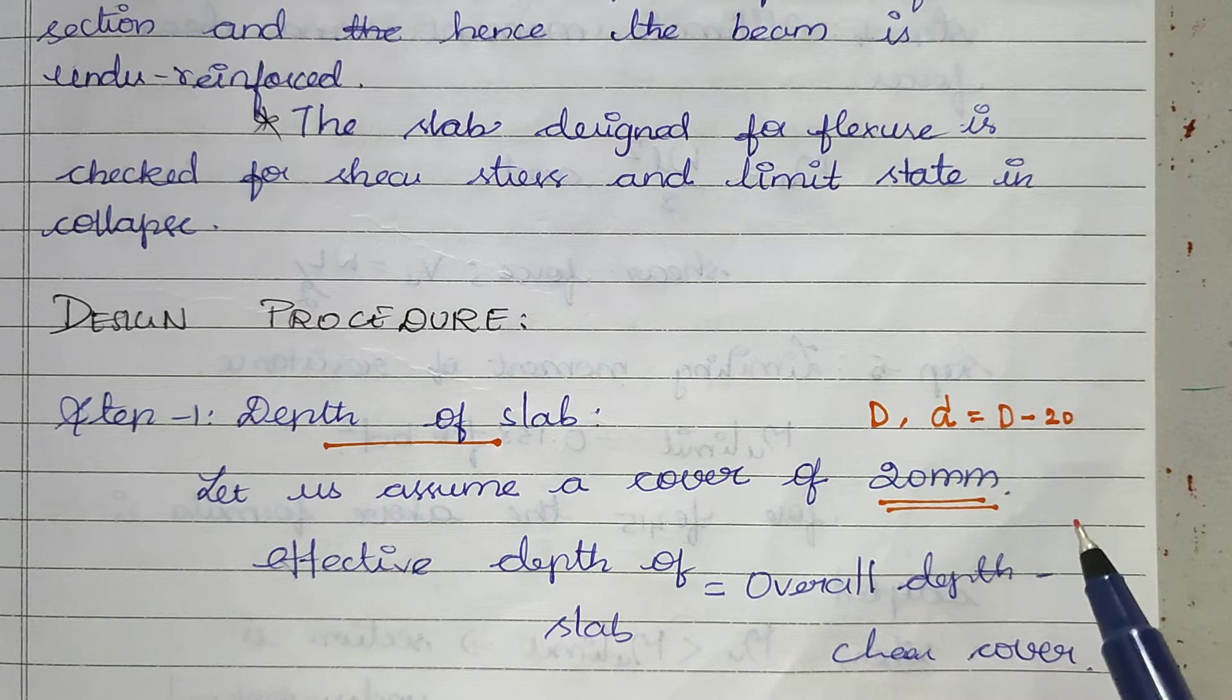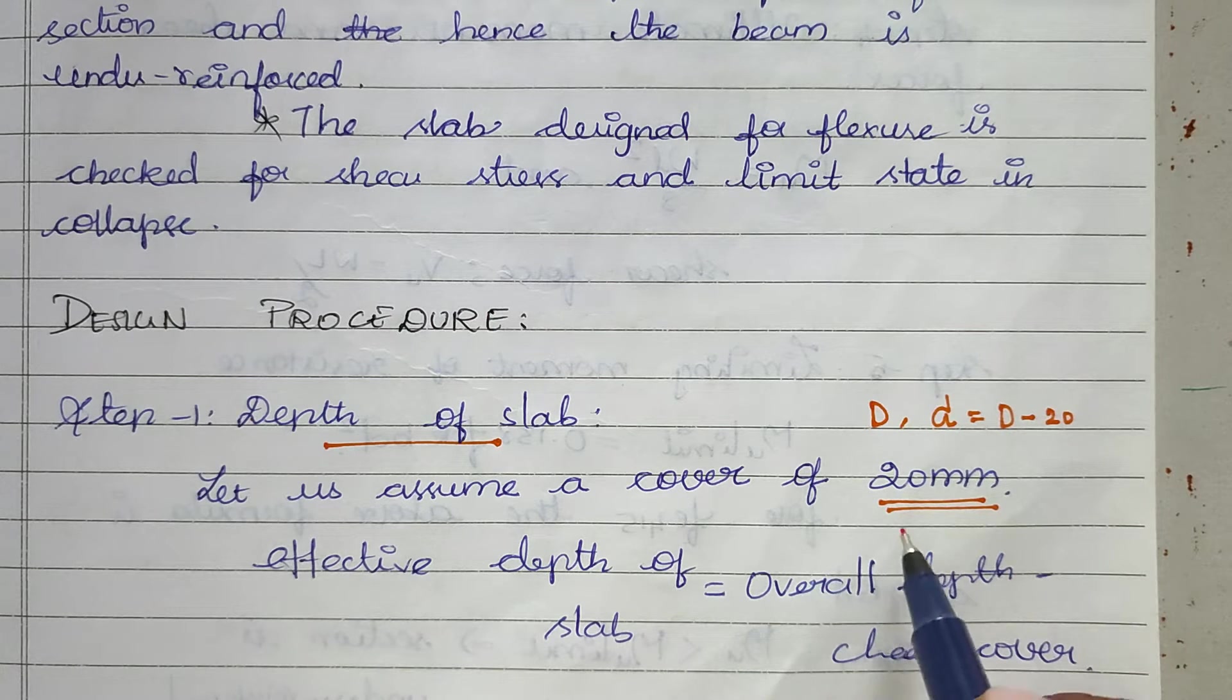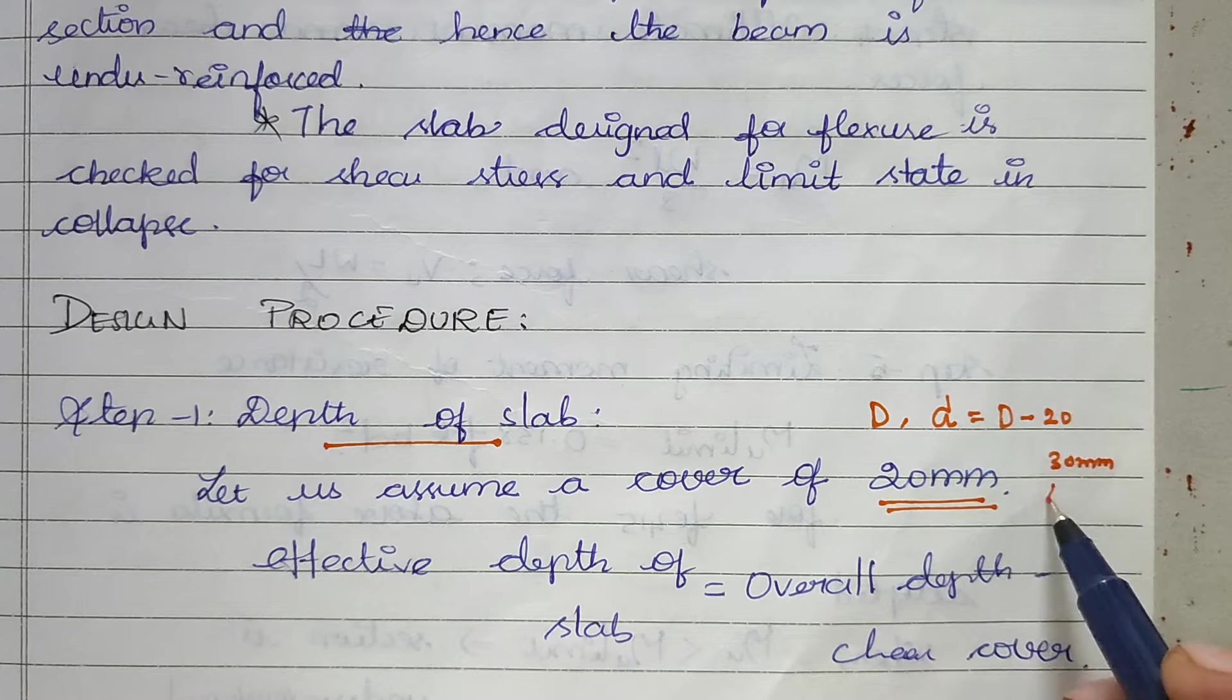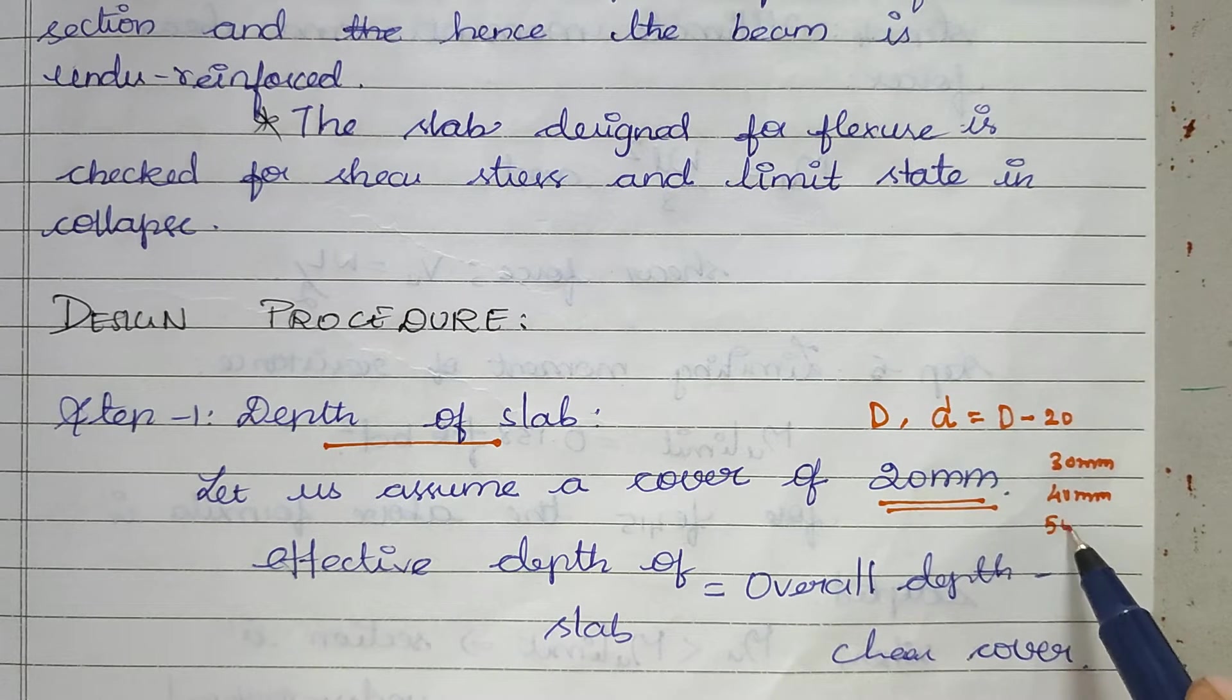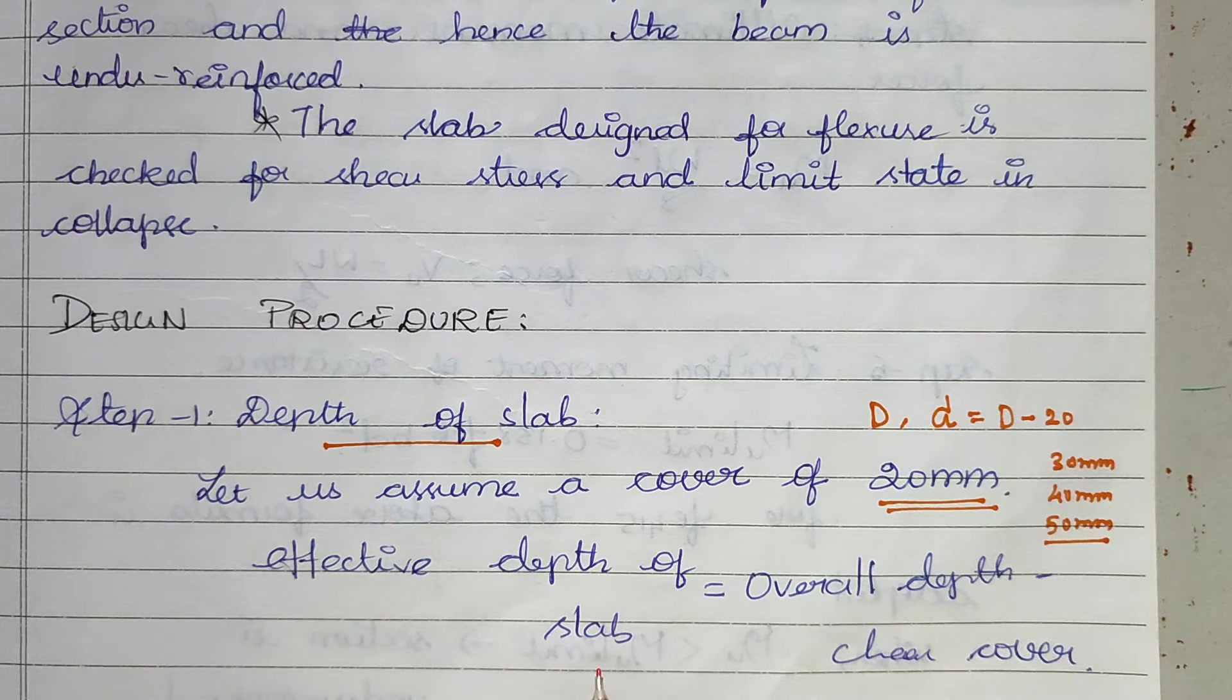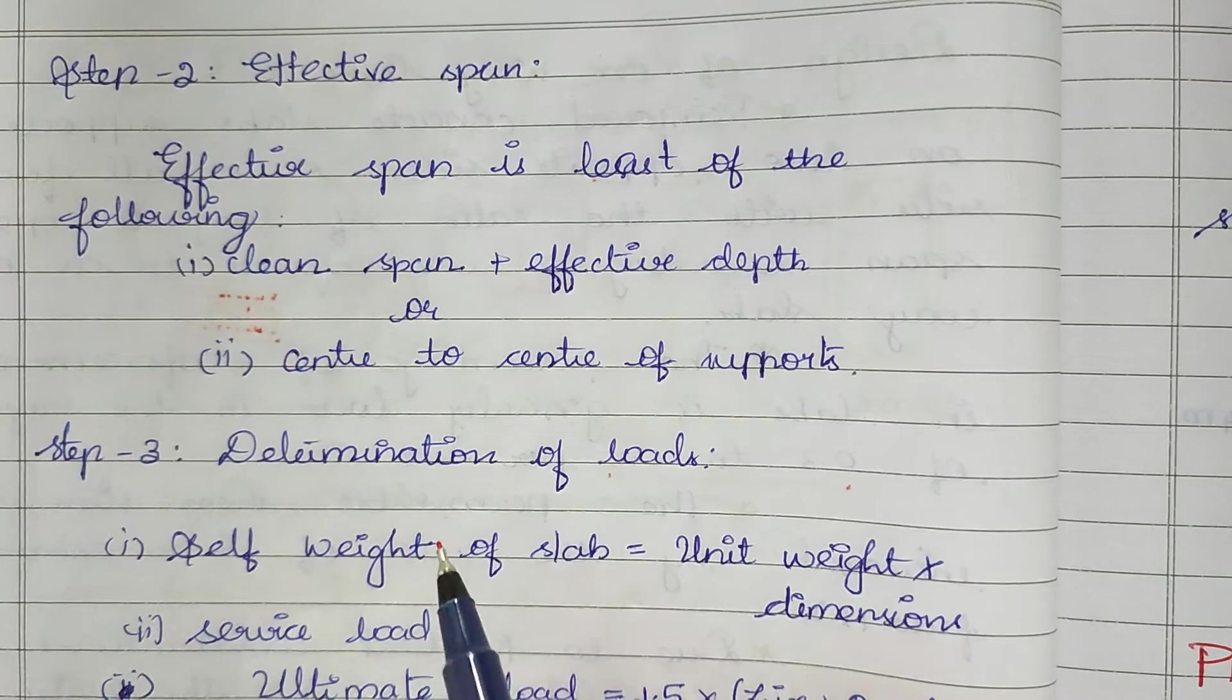Generally, we assume for slab cover is 20 mm, for beam 30 mm, for column 40 mm, and for foundation 50 mm. These are the assumed cover thicknesses. The effective depth of slab is overall depth minus cover thickness.